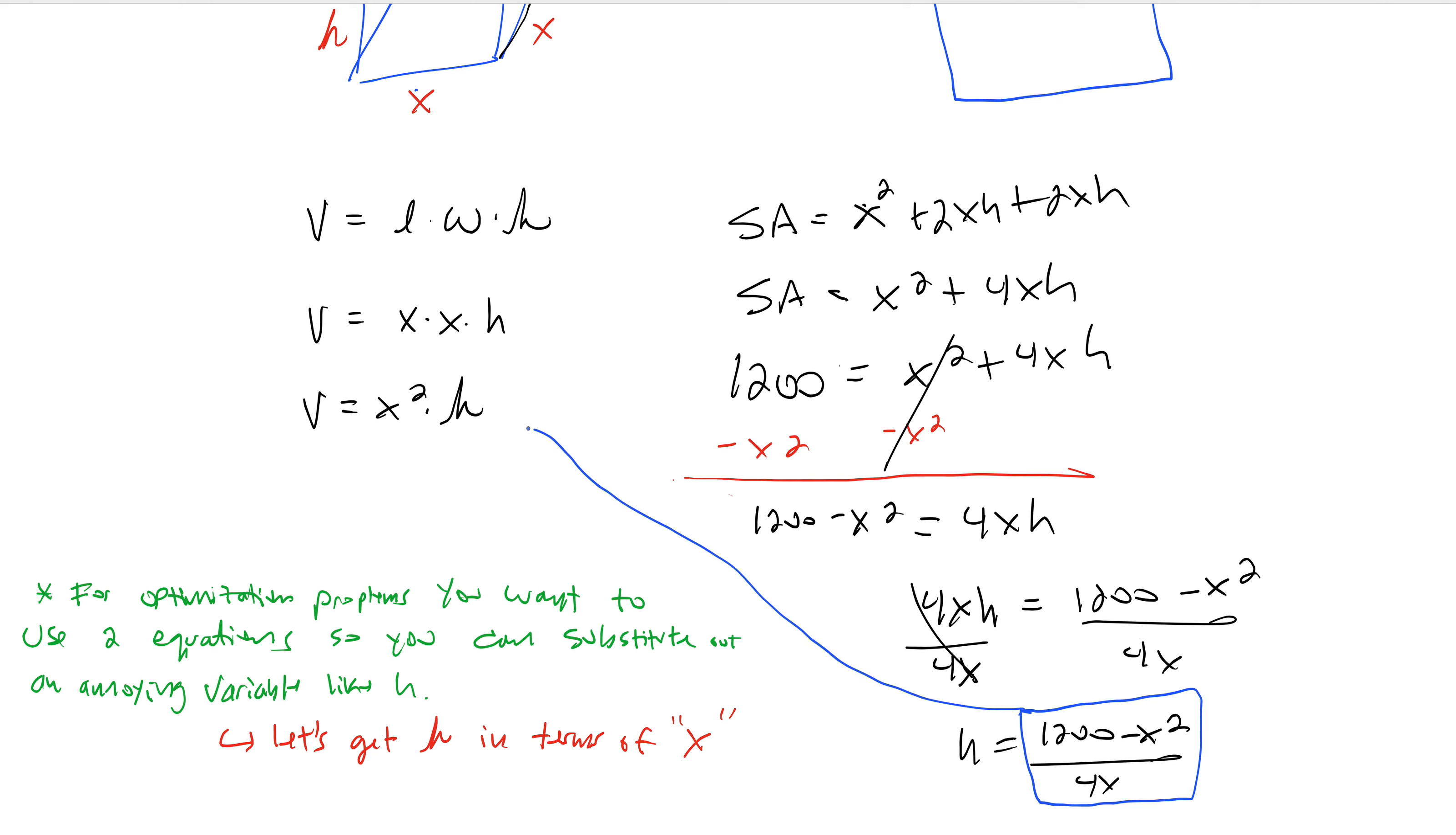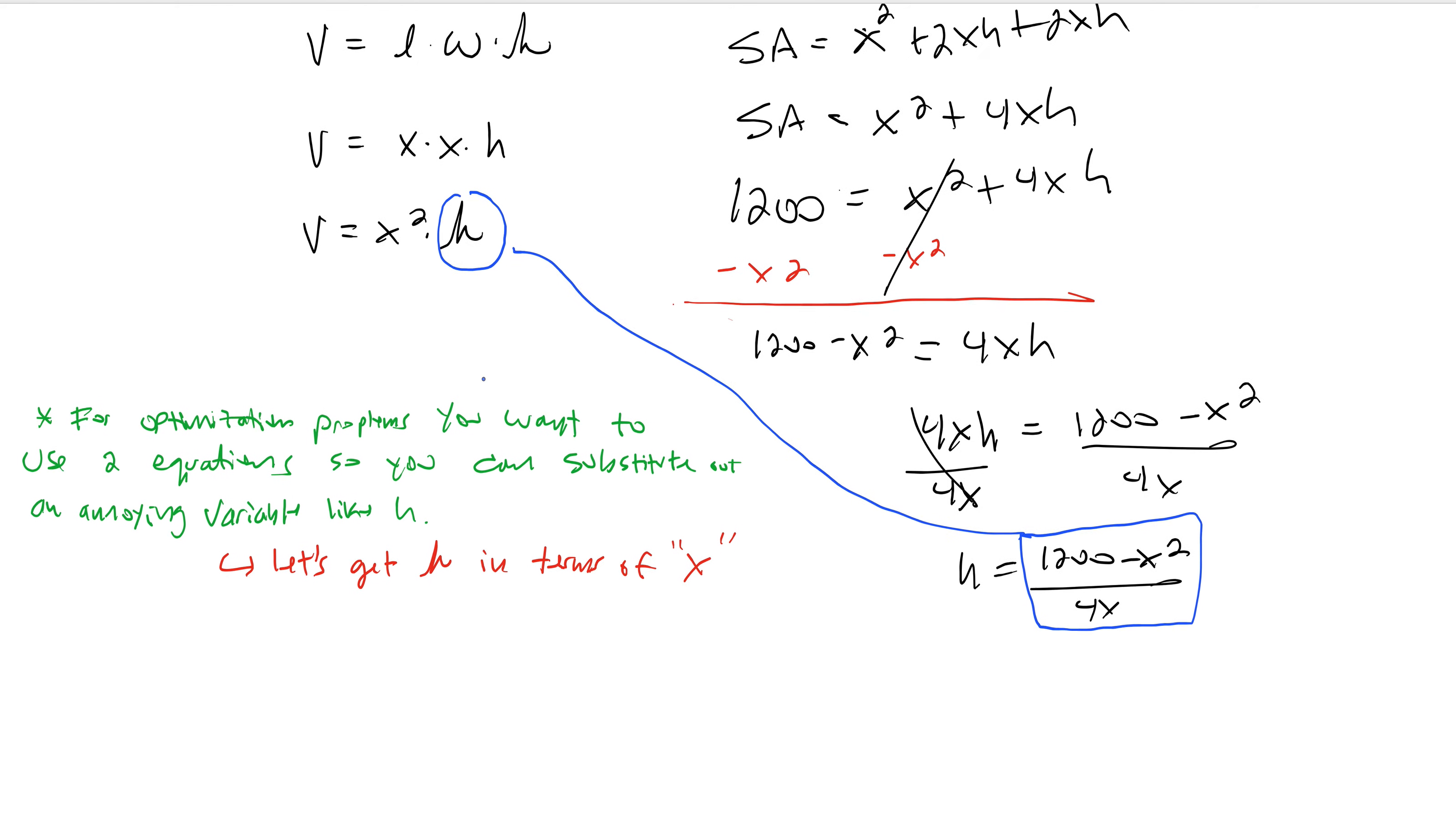And if I remember correctly, unlike related rates, we're not doing implicit differentiation. Yeah. Right? So you don't want two letters. You want it all in terms of the same letter. Yeah. Okay. So let's get H. So we have this. So if we wanted to, we could say, we could rewrite it as, we can go minus X squared, minus X squared. 4XH equals 1200 minus X squared. H equals 1200 minus X squared over 4X. Got that? Then we're going to go right here. I'm so glad we did Newton method videos because the stuff had already been all figured out already. V equals X squared times 1200 minus X squared over 4X. Okay?